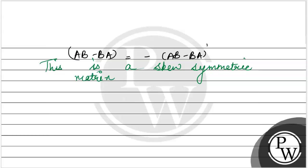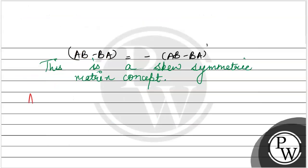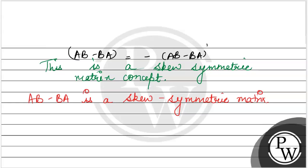This is a skew symmetric matrix. So we can see that AB minus BA is a skew symmetric matrix. We have proved this question by using our two key concepts. Hope you understood it well — best of luck.